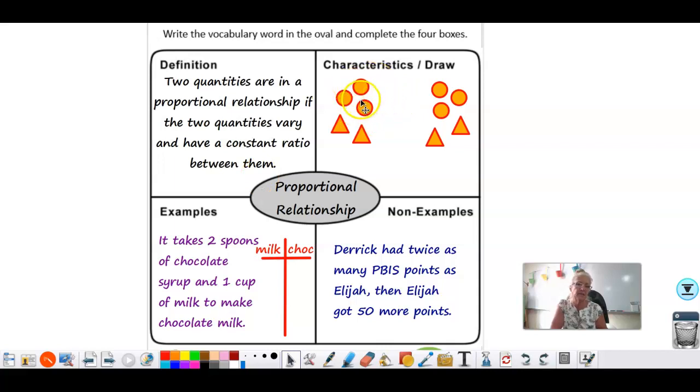Characteristics or drawings. What this means is that this little grouping of symbols and this little grouping of symbols are proportional. Here we have three circles to two triangles. And if I take these three circles and put these two triangles with them, then we would have six circles and four triangles. And six to four is proportional to three to two. They have a constant ratio.